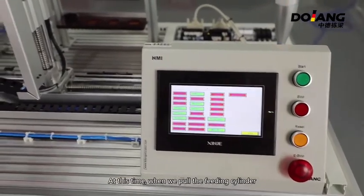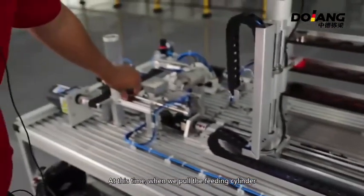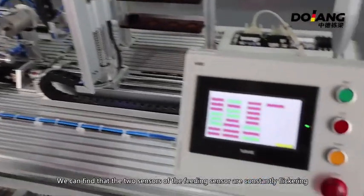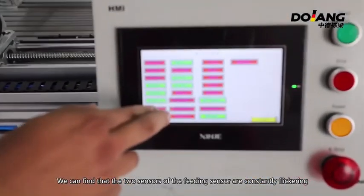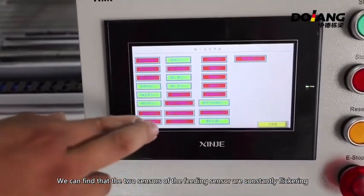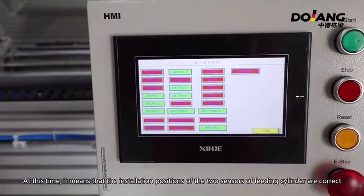At this time, when we pull the feeding cylinder, we can find that the two sensors of the feeding cylinder are constantly flickering. At this time, it means that the installation position of the two sensors of the feeding cylinder are correct.